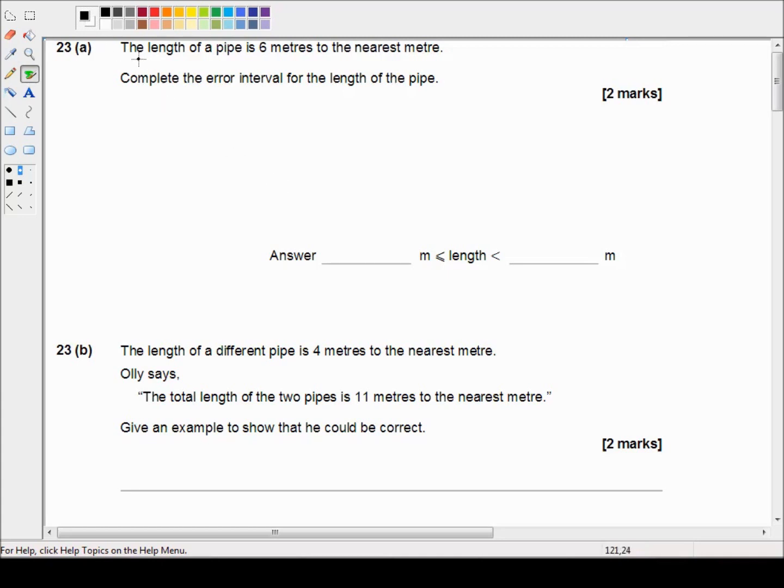23a says the length of a pipe is six meters to the nearest meter. Complete the error interval for the length of a pipe. Okay so an error interval is just the range of possible values that six meters could be, the possible values. It's the lower bound and the upper bound.